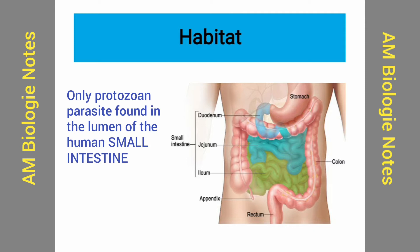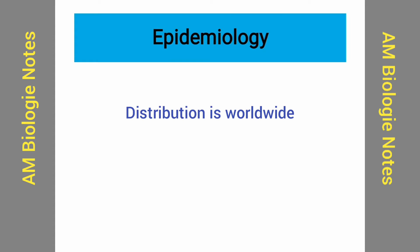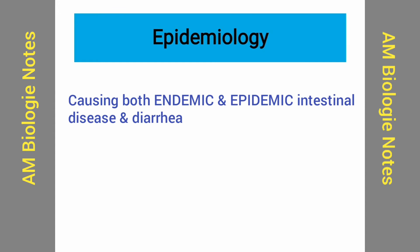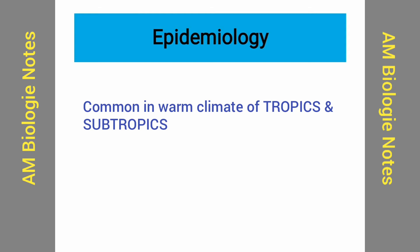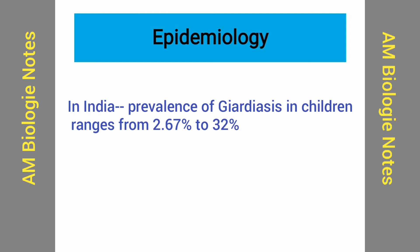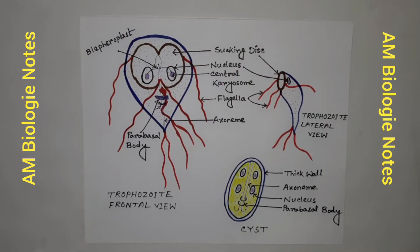Epidemiology: Giardia intestinalis has worldwide distribution. It is considered one of the most common parasitic diseases, causing both endemic and epidemic intestinal diseases and diarrhea. They are more common in the warm climate of tropics and subtropics. In India, the prevalence of Giardia cysts in children ranges from 2.67 to 32%.